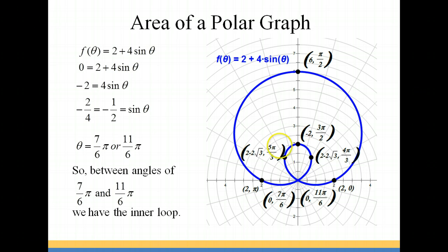So if we find the area of the inner loop, we should be able to find the area of the shaded region by finding the area of the outer loop and subtracting the two.